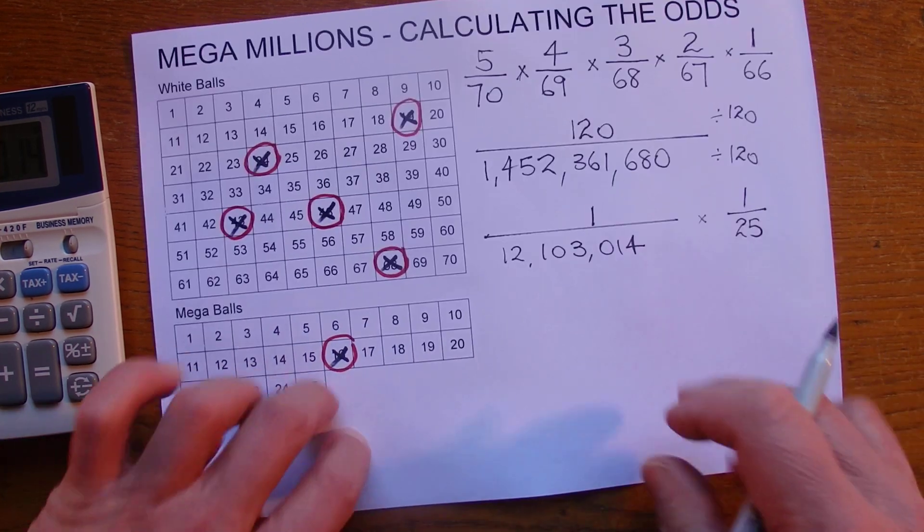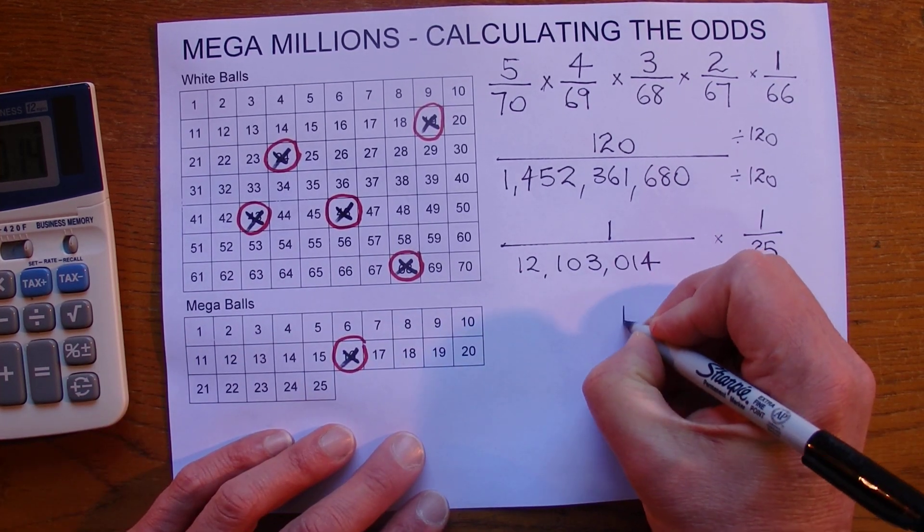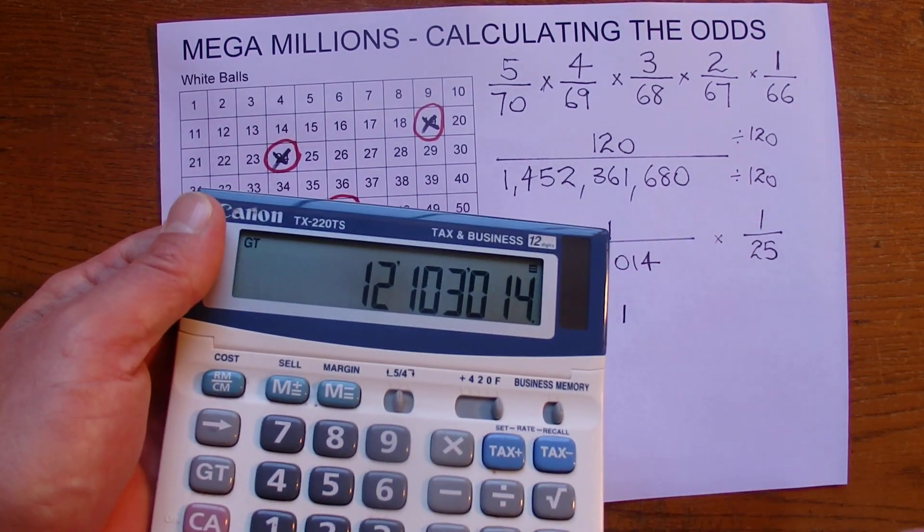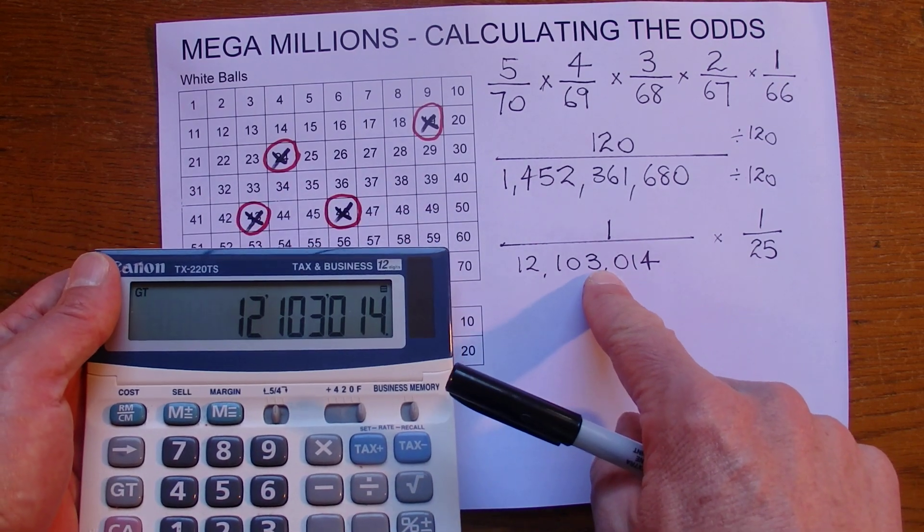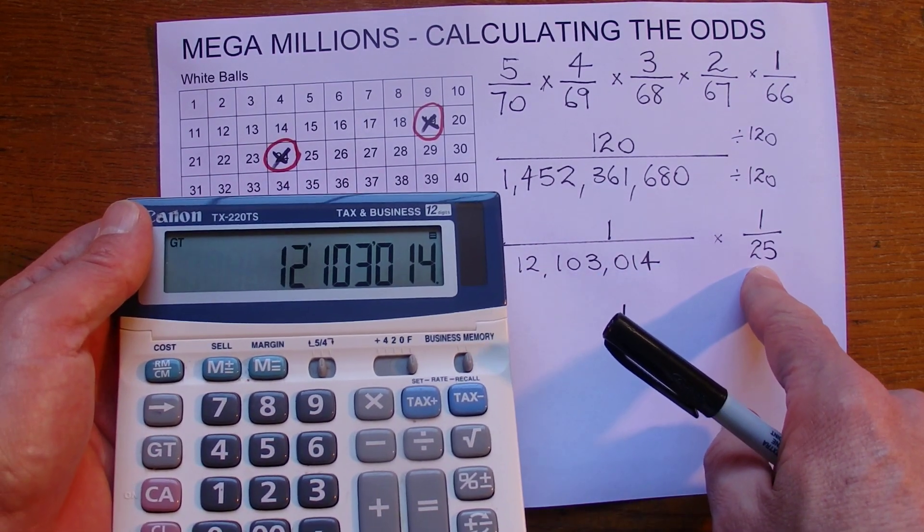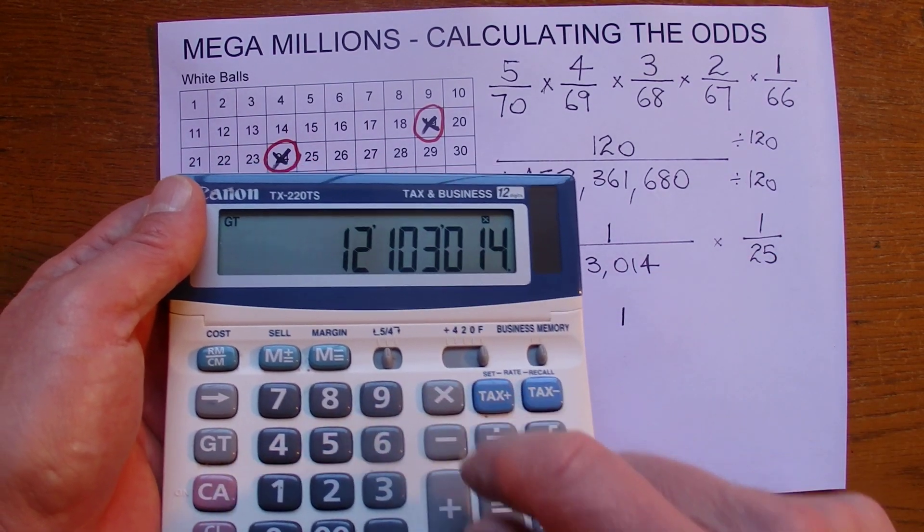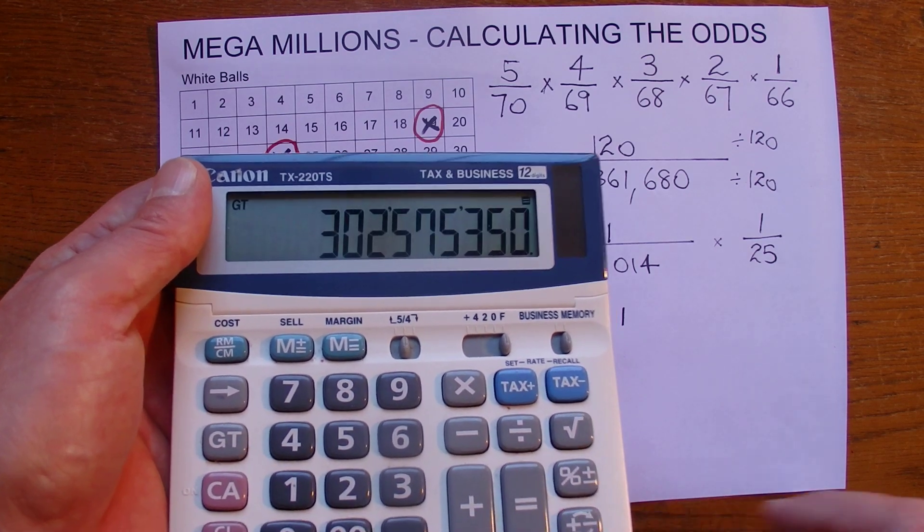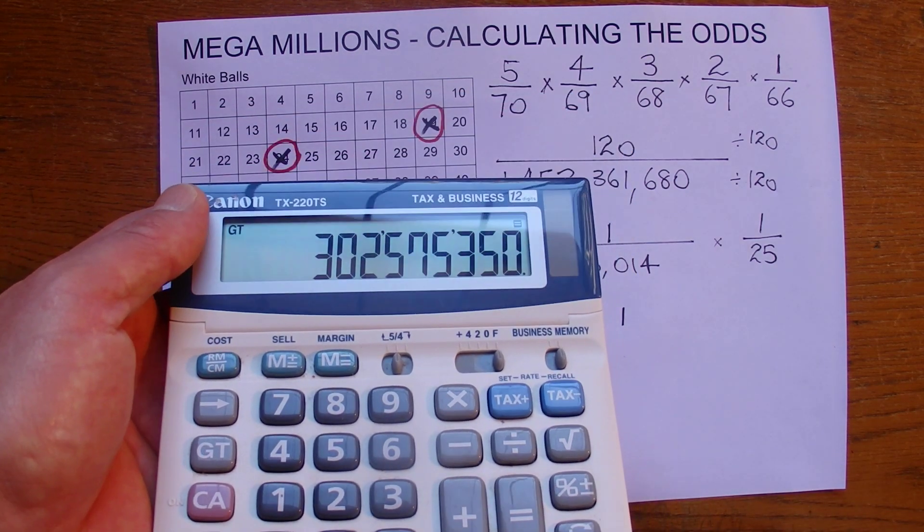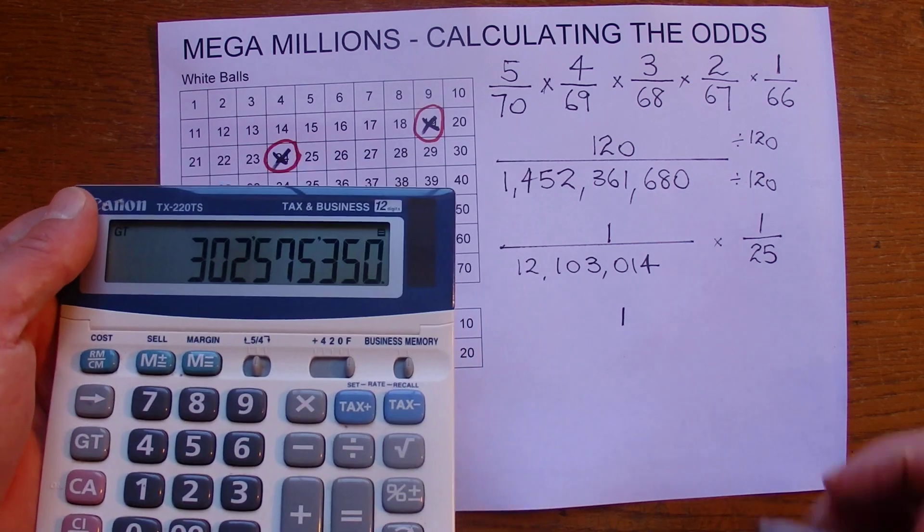And multiply that out. So it's one times one is going to be one. And then we've got to multiply the 12,103,014 by 25. So put that in my calculator and multiply it by 25. And there we go. The answer is one chance in 302 million.